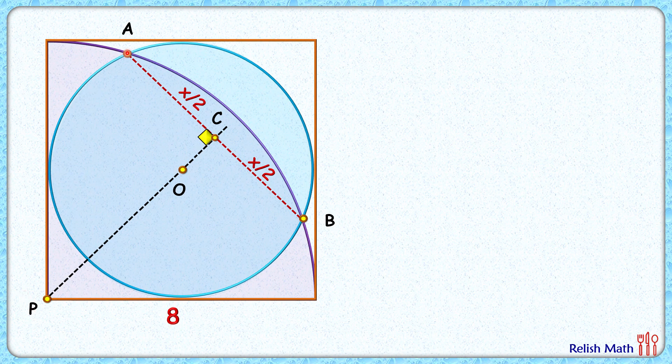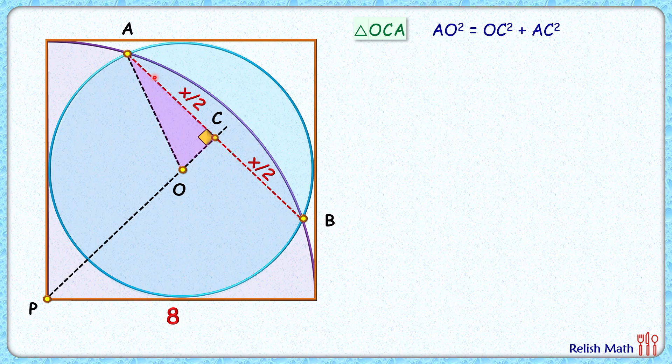Now let's join AO here. In this right angle triangle ACO, if we apply Pythagoras theorem we will get AO² = AC² + OC². Now the length AO is the radius of blue circle. The diameter of blue circle is 8 cm and thus AO length will be 4 cm.